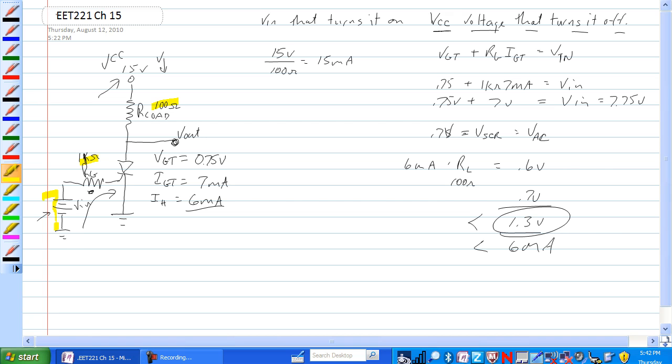Voltage for gate to turn it on is 0.75 volts and current to turn it on is 7 milliamps. I holding is 6 milliamps. We're going to ignore this I holding for right now and figure out how much voltage is required on VN to turn this SCR on.